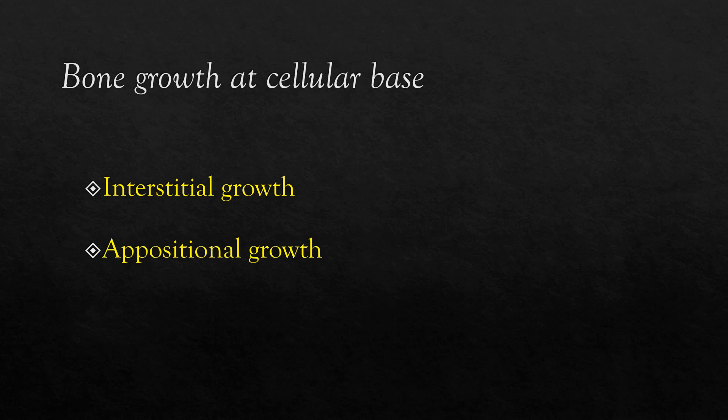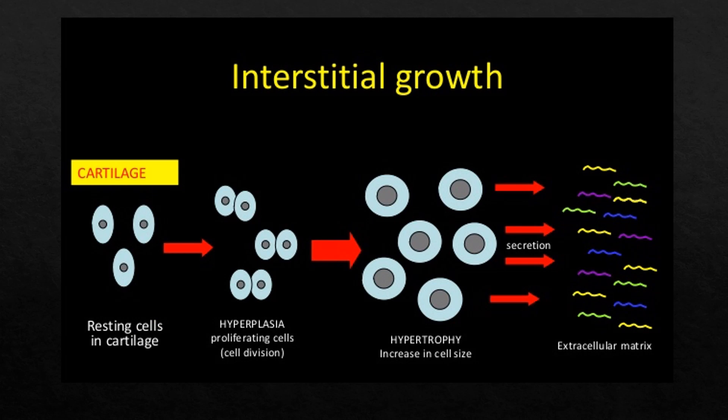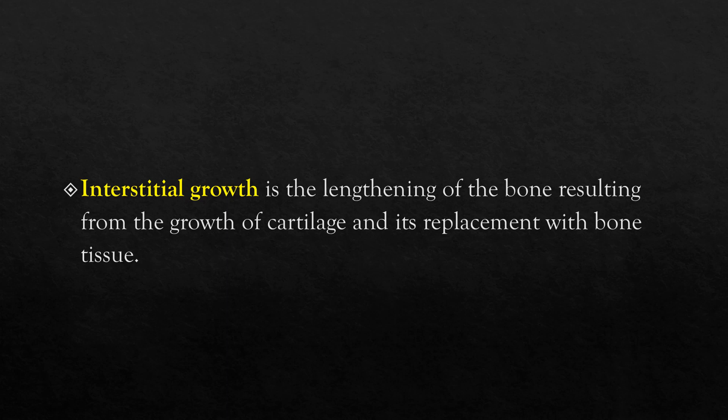At the cellular base, growth may occur in two ways. Interstitial growth consists of an increase in cellular size, increase in cell number, or increase in extracellular matrix secretion. Interstitial growth may continue until the extracellular matrix gets mineralized. Appositional growth occurs when new bone tissue is deposited on the surface of the bone. Interstitial growth is the lengthening of bone resulting from the growth of cartilage and its replacement with bone tissue. A person grows taller because of interstitial growth.